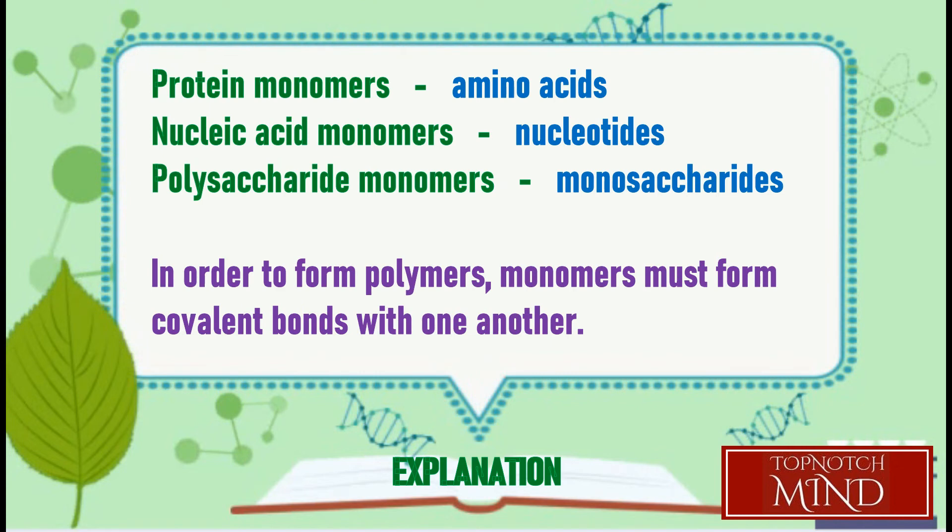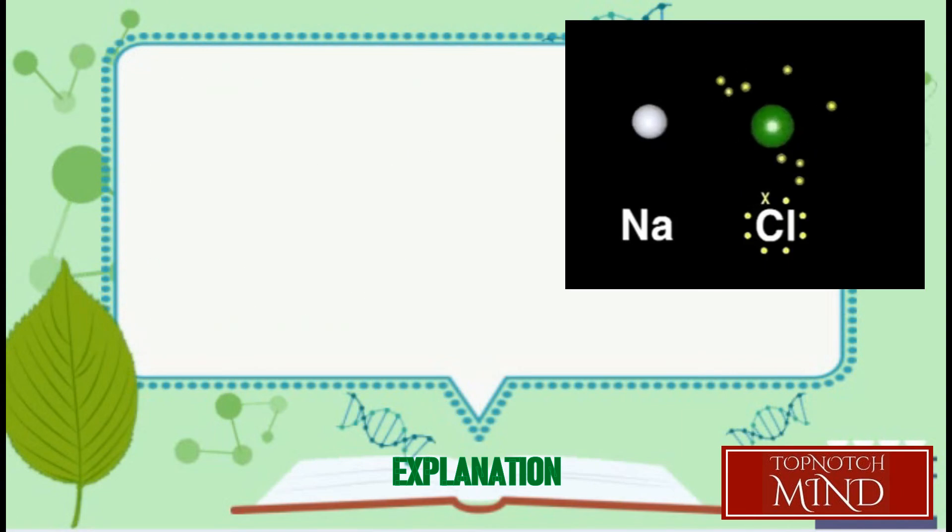Protein monomers are amino acids. Nucleic acid monomers are nucleotides. Polysaccharide monomers are monosaccharides. In order to form polymers, monomers must form covalent bonds with one another.